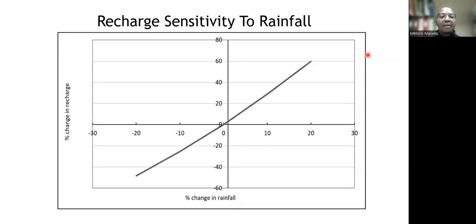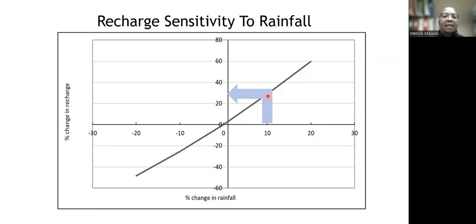Looking at just one of the parameters that recharge is sensitive to — rainfall — what we found was that for the latter portion of the graph, the recharge had an almost steady response to rainfall, whereby a 10% increase in rainfall resulted in almost a 30% increase in recharge. This indicated the high degree of sensitivity that the recharge in our ACRU model had to rainfall, and this further supported the grid-based approach that allows for better spatial distribution of rainfall across the model domain.